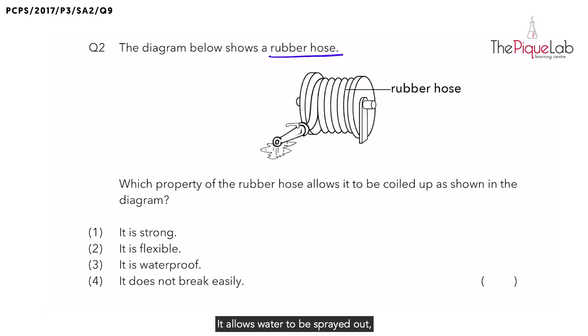So what's a rubber hose for? It allows water to be sprayed out, either to water your plants or to wash your car. When students answer this question, they immediately choose it is waterproof and choose option three as their answer.